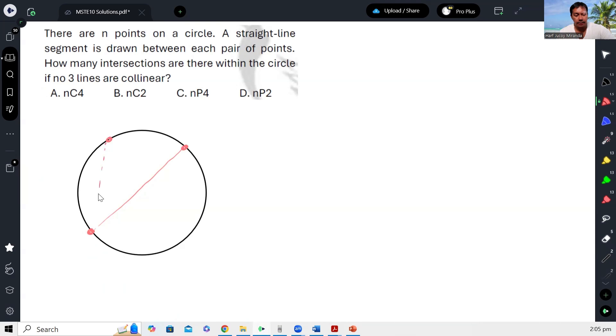We can only draw one segment, okay. Tapos kapag naman, let's say tatlo, we can draw three segments diba? Eto tsaka to. But if you only have three points, you cannot create any point of intersection within the circle kasi hindi mag-i-intersect yan, no?